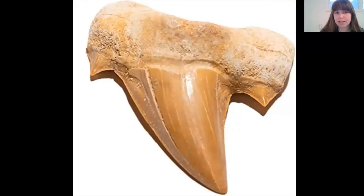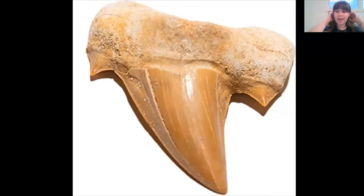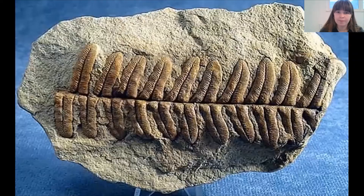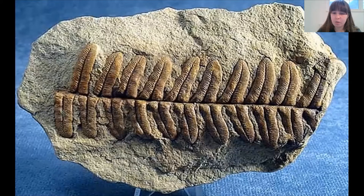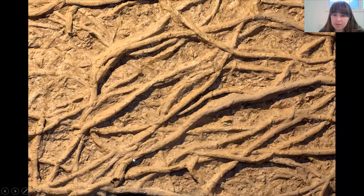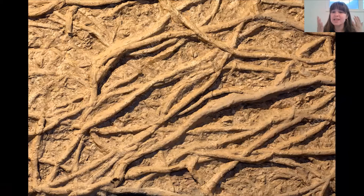Let's look at some pictures of different types of fossils and identify whether they are body fossils or trace fossils. This first picture is a fossil of a tooth — that's a body fossil because it came directly off the body of some kind of animal. Here is a fossil of a plant stuck inside sediment — also a body fossil. And here we have some underground trails made probably by some kind of worm — since these are trails and not the worm's body, this is a trace fossil.